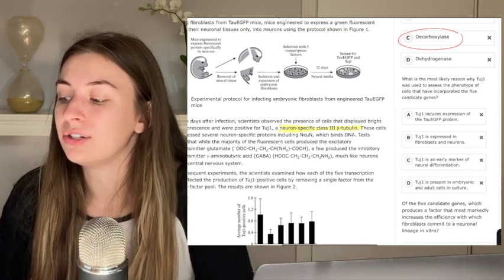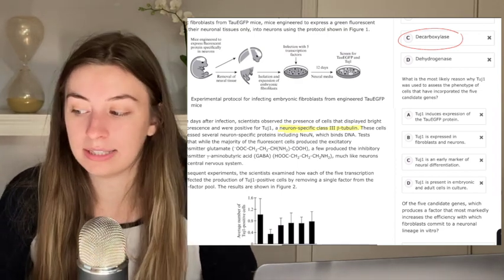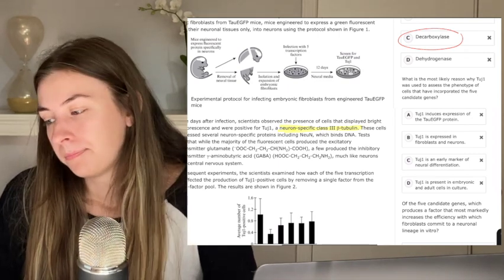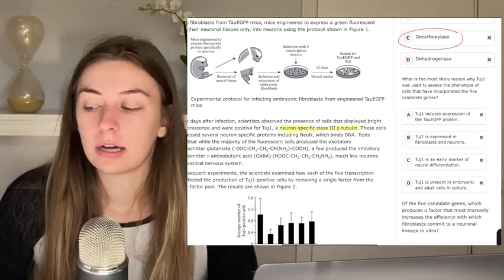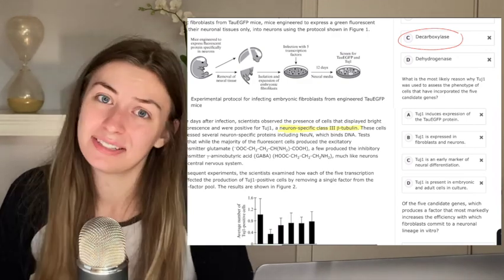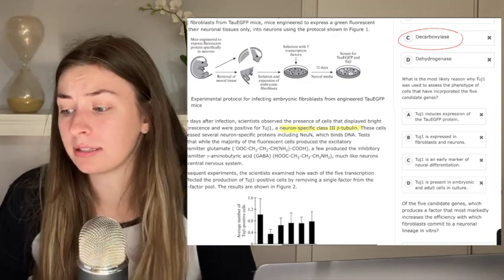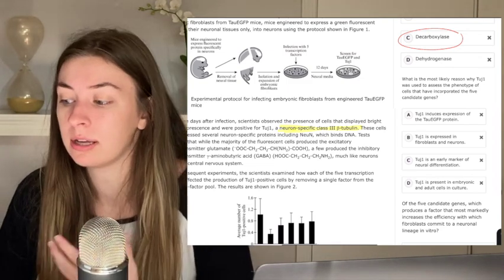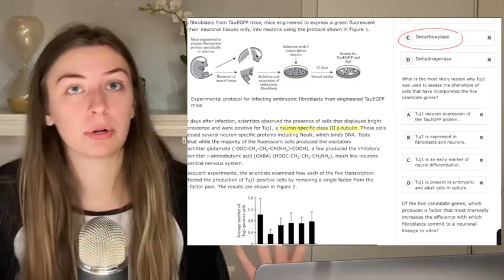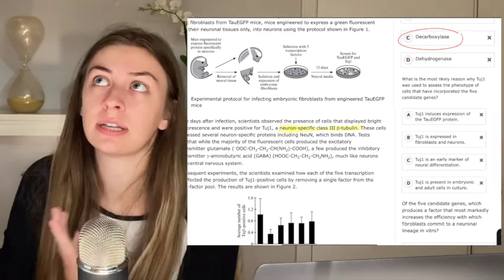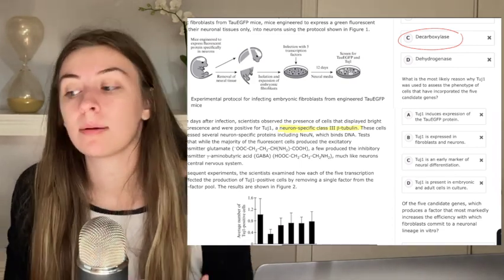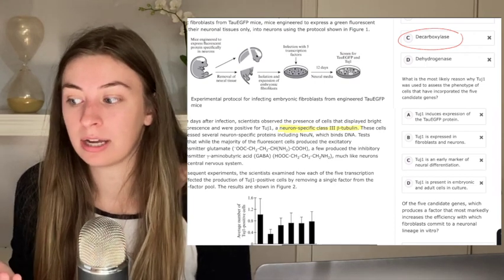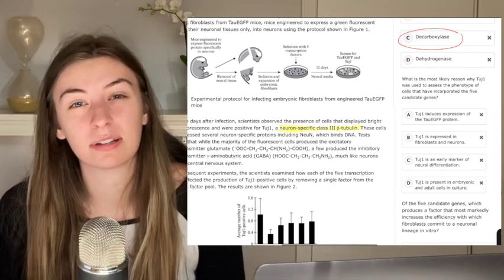A says TUJ1 induces expression of the tau-AGFP protein. That doesn't make sense to me. And I know that from the passage. I'm not coming in as a tutor knowing that TUJ1 as a protein does not induce this tau-AGFP protein. I'm saying the passage didn't tell me that. So, I'm going out on a limb and saying that that's probably not the right answer.